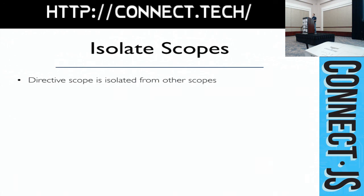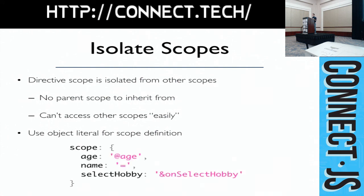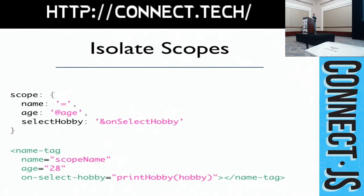With isolate scope, the scope is isolated. Before, with prototypal scoping, you had parent-child sharing. Now these directives have isolate scopes — there's no sharing. Any sharing is more explicit through bindings like two-way bindings and callbacks. No parent scope. We can't easily access other scopes. We use an object literal to define these bindings. To explain some of the interesting syntax, let's return to the name-tag directive.